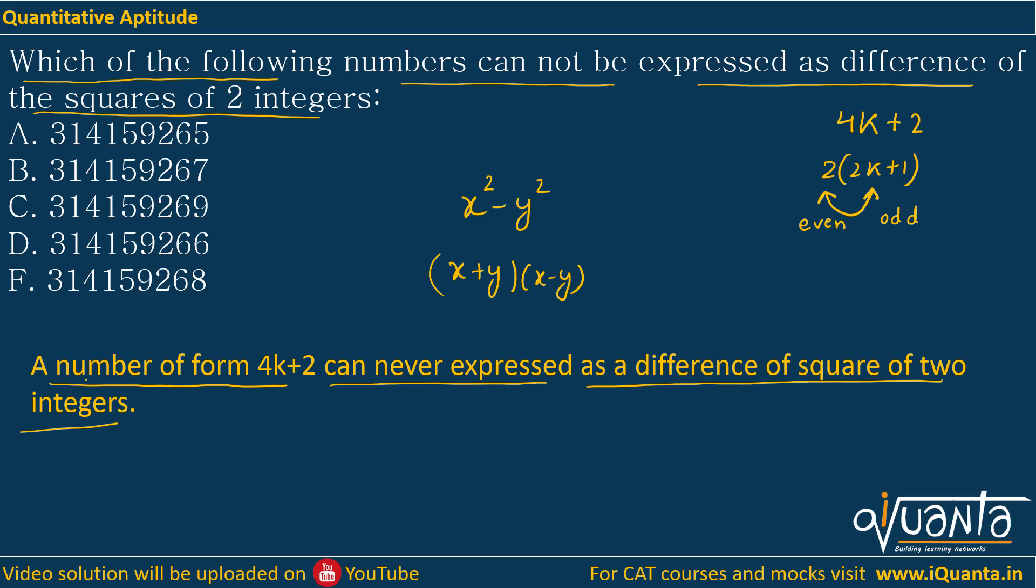If you change the value of k: if you put k equal to 0, you will get 2, which is a product of 1 into 2 (1 is odd, 2 is even). If you put k equals 1, you will get 6, which is a product of 2 into 3 (one is even, one is odd). If you put k equals 2, you will get 10, which is product of 2 into 5 (one is even, one is odd). If you put k equal to 3, you will get 14, which can be written as 2 into 7 (one is even, one is odd).